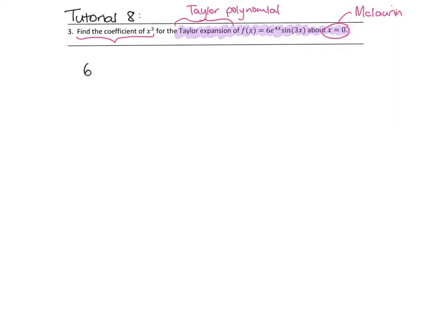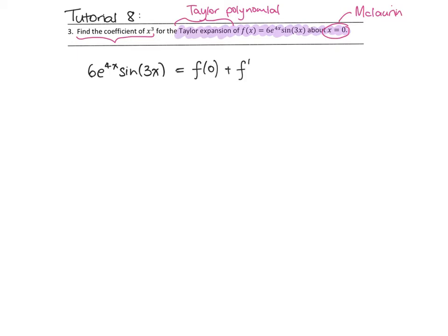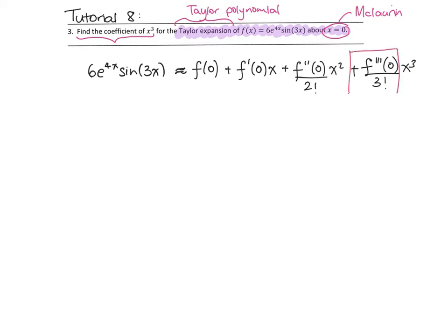If we write out the Taylor polynomial formula for sine of 3x, what we're going to have is f evaluated at 0, plus the first derivative evaluated at 0 times x, plus the second derivative evaluated at 0 over 2 factorial times x squared, plus the third derivative evaluated at 0 over 3 factorial times x cubed. The thing we're actually looking for is this coefficient — the third derivative evaluated at 0 divided by 3 factorial.